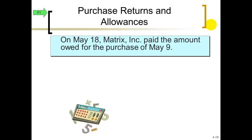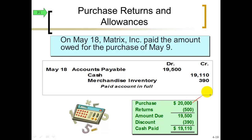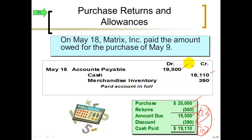Now we pay off our bill within the 10-day discount period. We're not taking 2% of the full $20,000 because we returned $500, leaving a net amount of $19,500. Two percent of $19,500 equals $390. So we're paying 98% of $19,500. Debit accounts payable for the full remaining balance, credit cash for 98%, and credit merchandise inventory for the 2% discount — remembering that we already reduced payable by $500 when we returned the defective inventory.